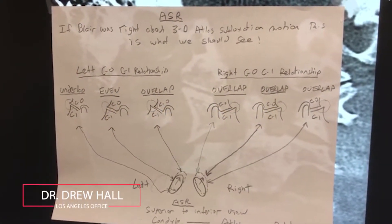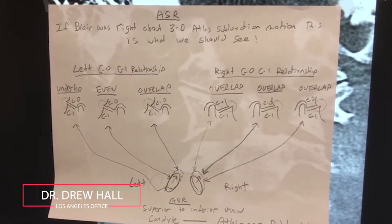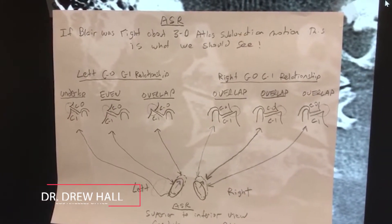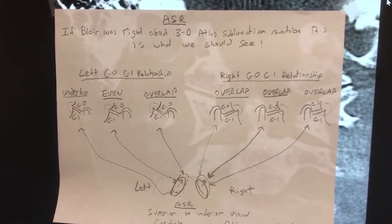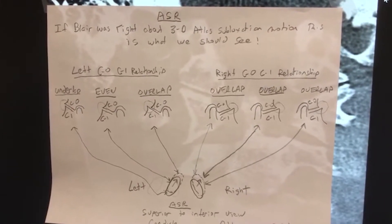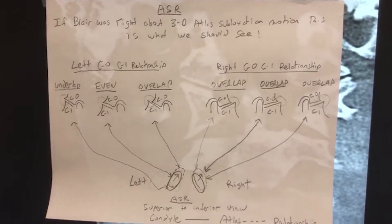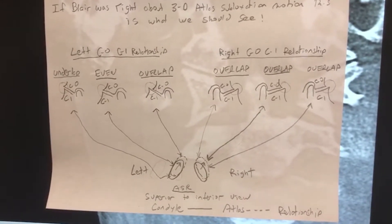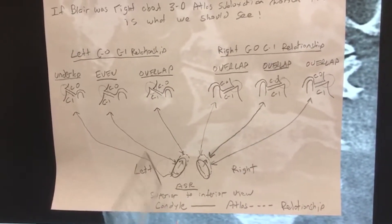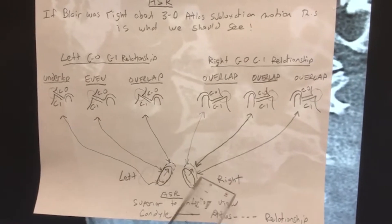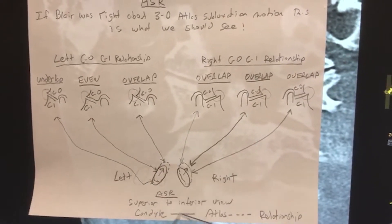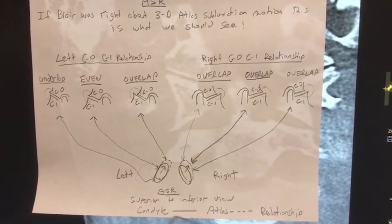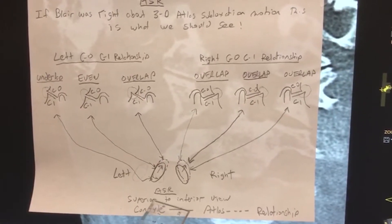What we're going to do is I'm going to first describe the atlas motion for those of you who have taken the Blair course, and we're going to look at six different points on the atlas-condyle relationship and what we should see if Dr. Blair was in fact right. So right here we have the left condyle and the right condyle. The dashed line represents the atlas and the solid line represents the condyle.